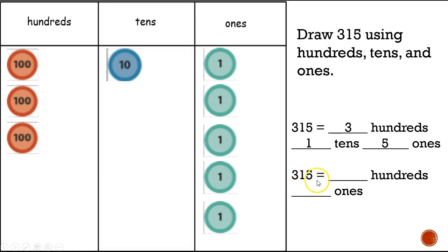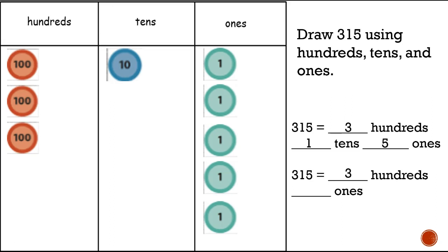Now it says three hundred and fifteen equals how many hundreds and how many ones — they took out the tens again. How many hundreds? Three. And since we don't have tens, we add the tens with our ones. How many ones? Fifteen. Give yourself a kiss on the brain!